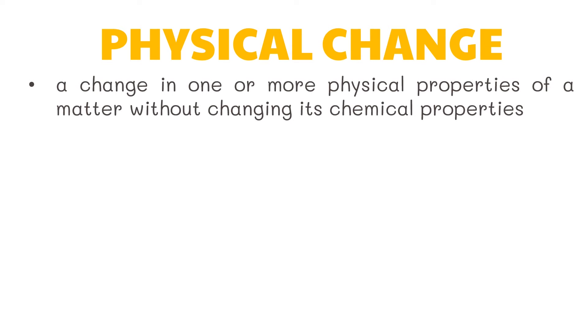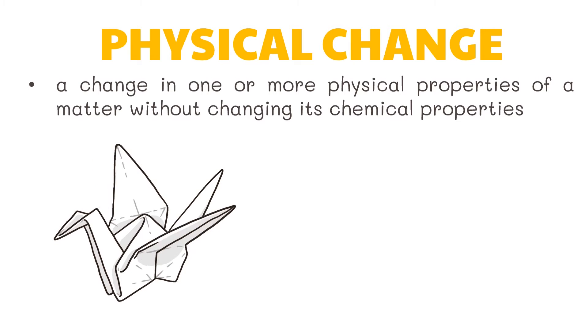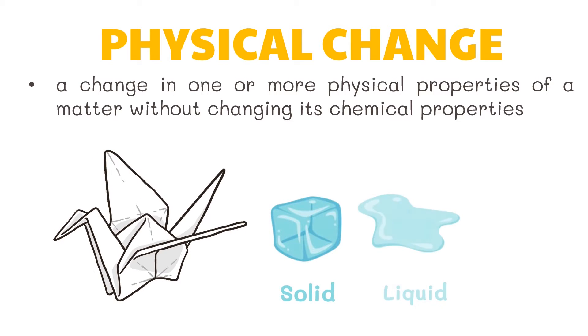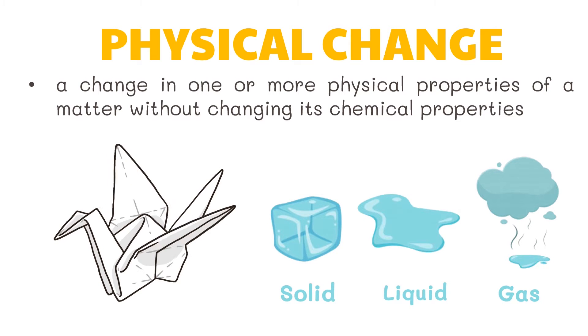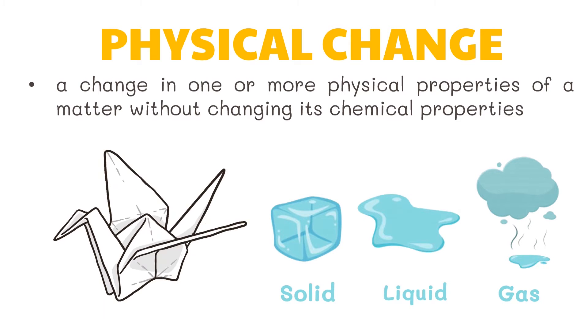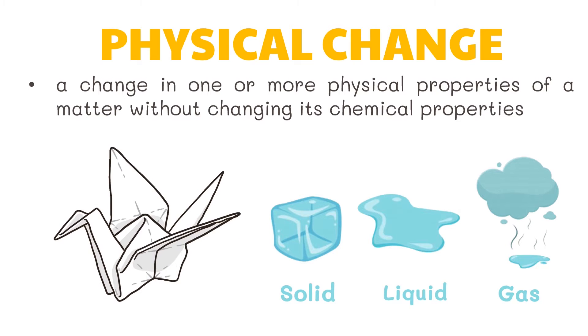Matter undergoes either physical or chemical change. Physical change is a change in one or more physical properties of matter without changing its chemical properties. Examples of physical change include changes in the size or shape of matter, like when you fold a piece of paper to origami art. Changes of state, from solid to liquid or from liquid to gas, are also examples of a physical change. Chemical change occurs when a substance is transformed into another substance, like when you burn a piece of paper.